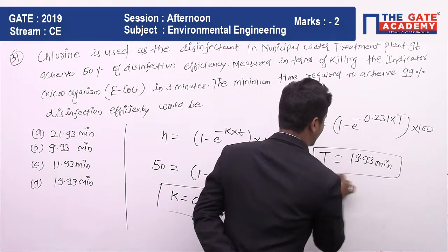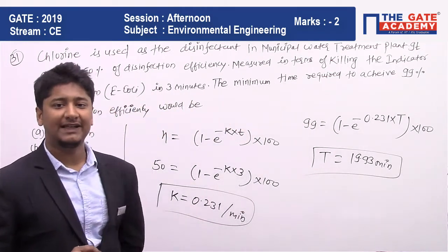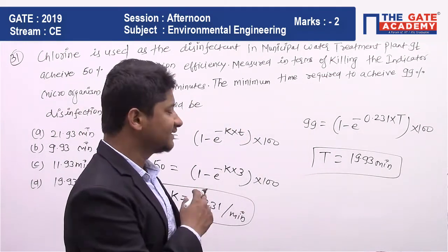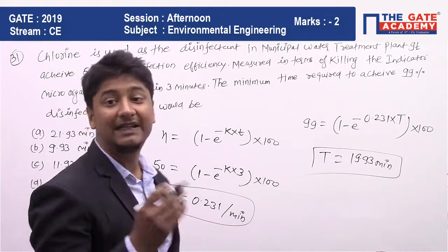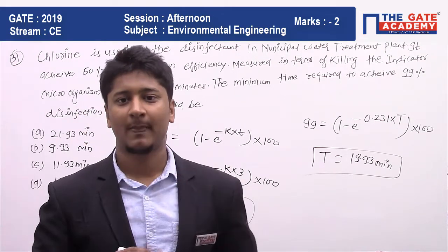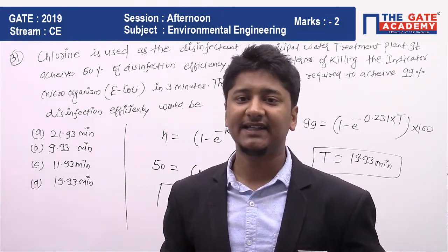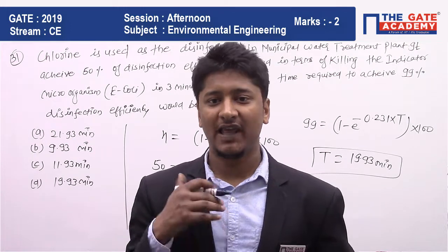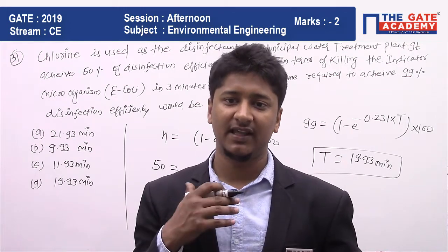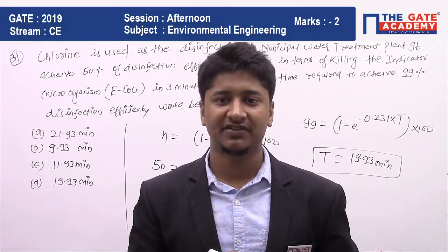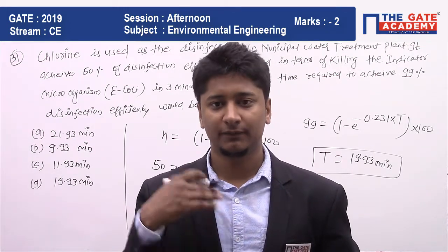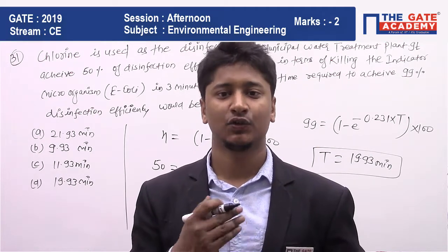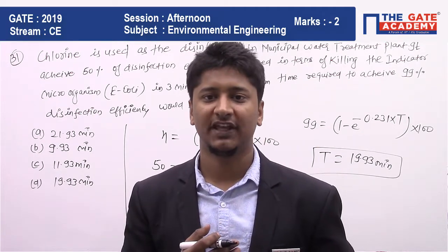After calculation, the time required is 19.93 minutes, which corresponds to option D. So the correct answer is D. I hope you liked this video. If you liked this solution and explanation, please subscribe to our channel for the next video related to the GATE 2019 civil engineering question paper. Thank you.